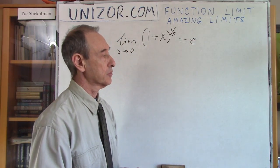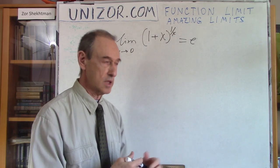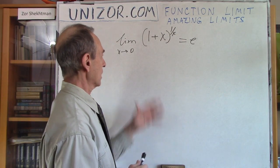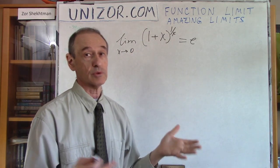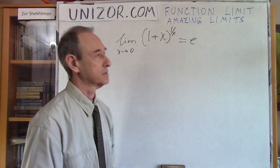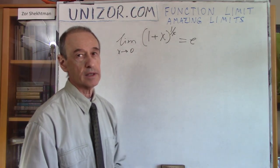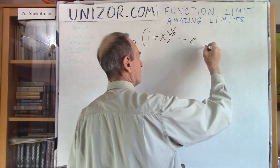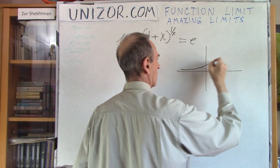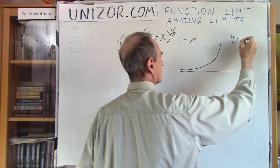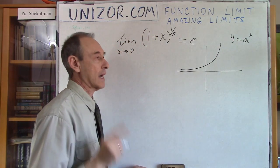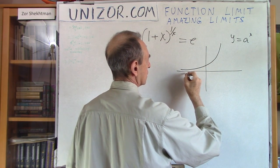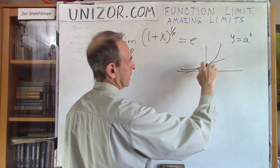My second amazing limit is: limit of (1 + x) to the power of 1 over x, as x goes to zero, equals e. I have introduced in this functional limit chapter what number e is. Number e — I will define it right now because I will be using this to prove this particular thing. Obviously, if I want to prove that this goes to e, I have to specify what exactly e is.